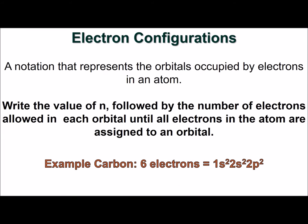There are two ways we can use these rules to describe electrons in an atom. The first is electron configuration, a description of which orbitals are occupied by electrons in an atom. To write an electron configuration, start by writing the value for n, followed by the letter value of L, then, as a superscript, the number of electrons that can be in each type of orbital.